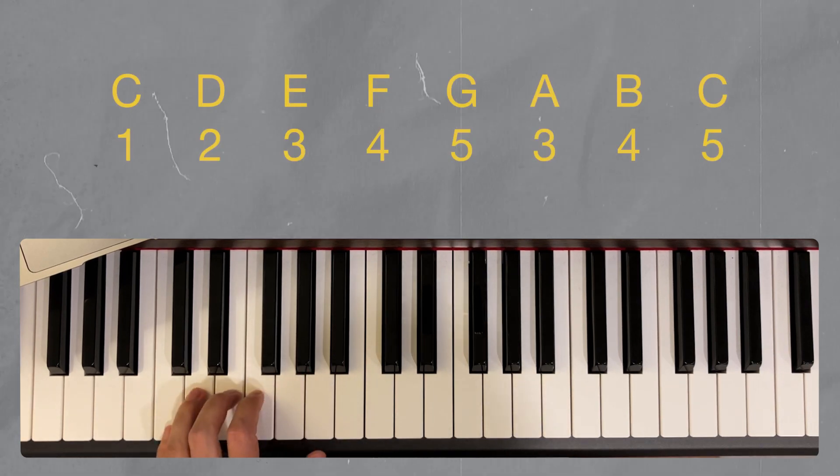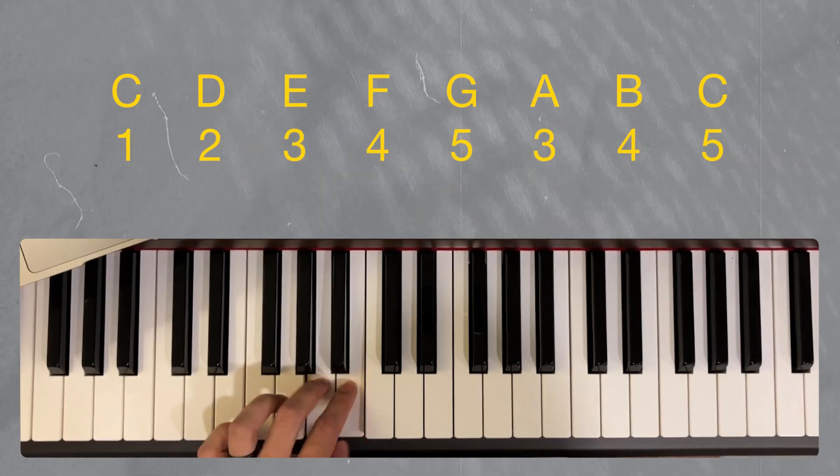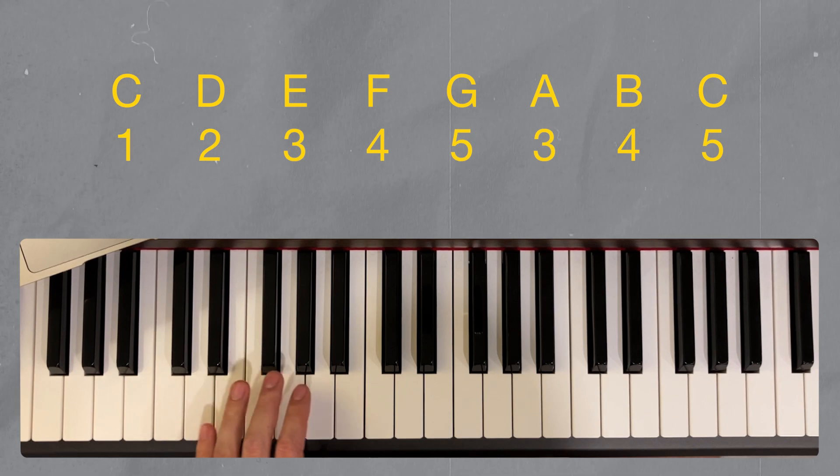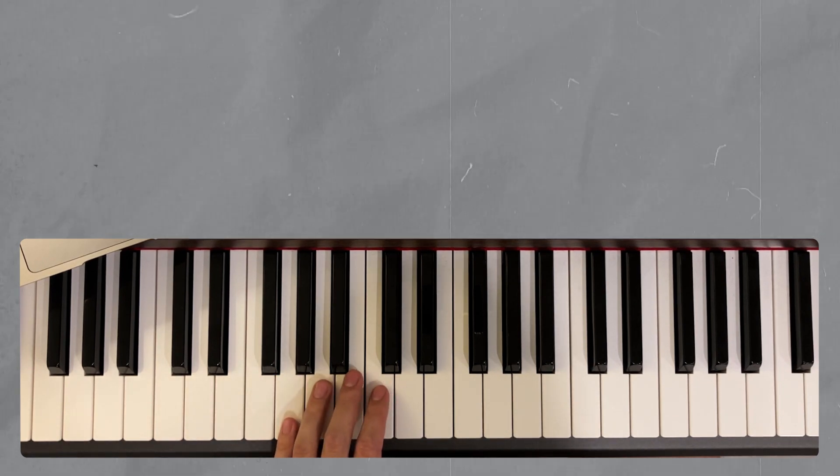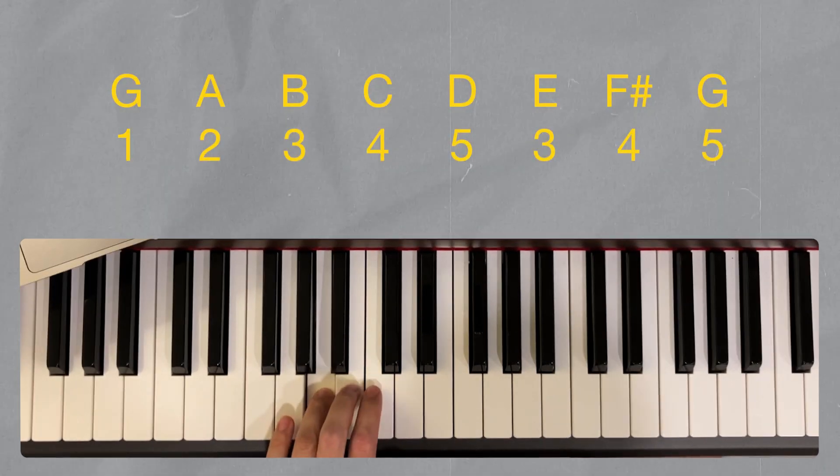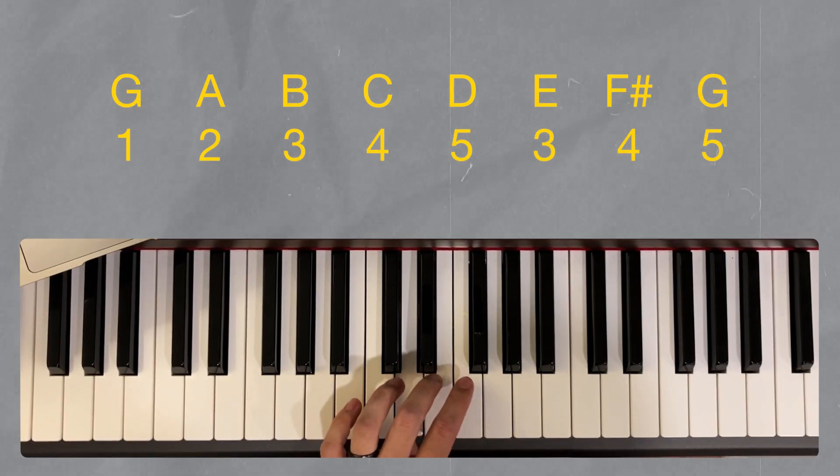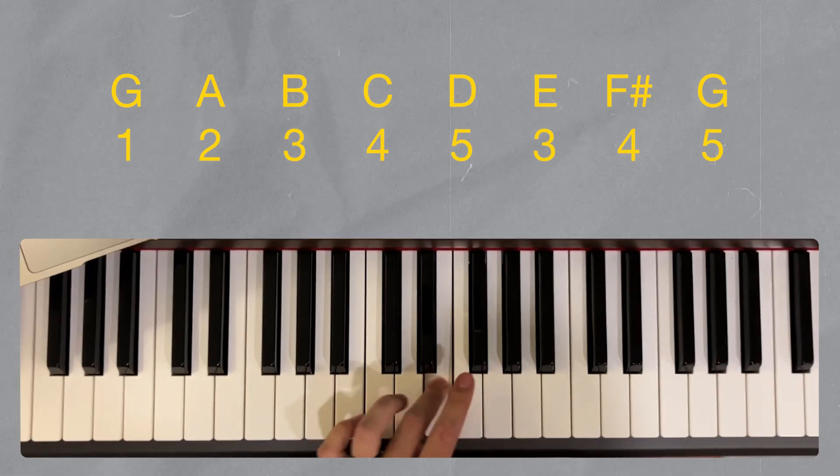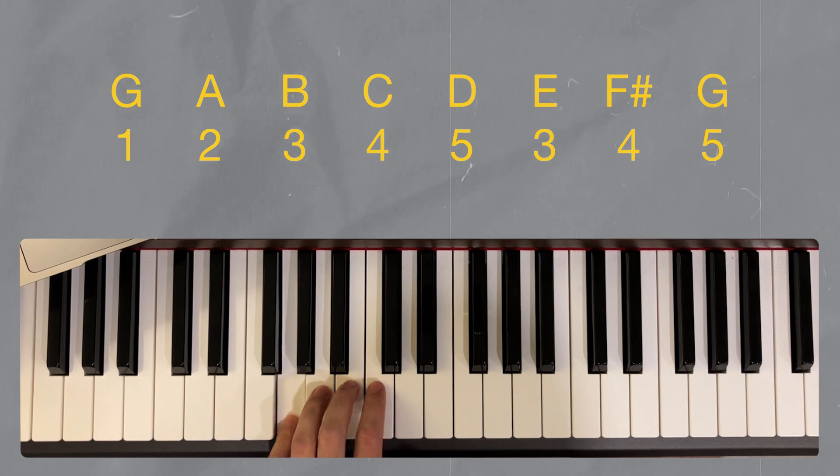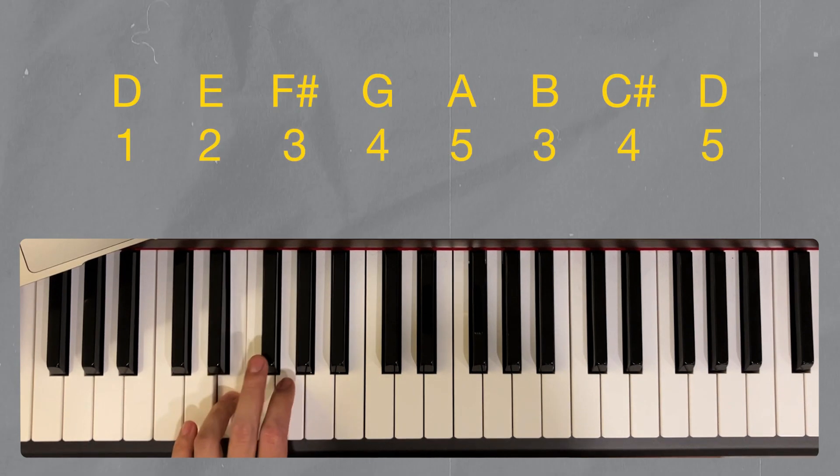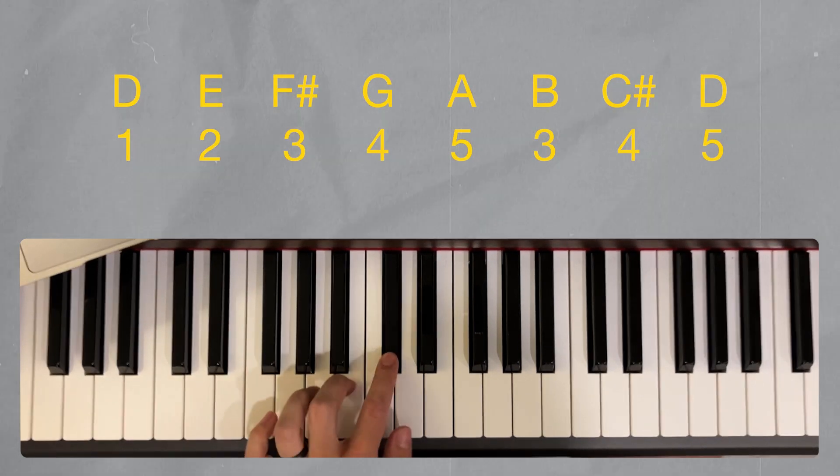Back to C. We'll go through the sharp side of the circle of fifths. G, 1, 2, 3, 4, 5, 3, 4, 5. D, 2, 3, 4, 5, 2, 3, 4, 5, 3, 4, 5.